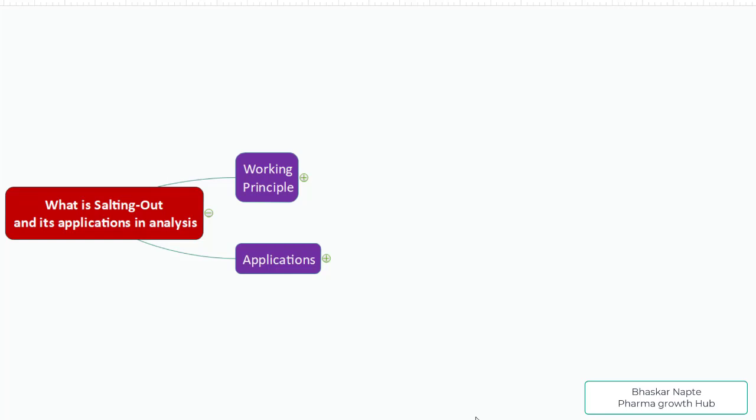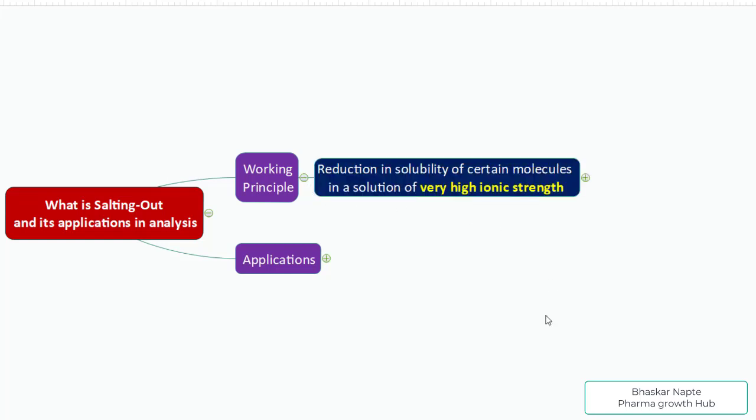At certain lower salt concentrations, the salt actually supports solubilizing proteins. But the moment you start increasing the salt concentration from very low to very high, you start seeing the proteins precipitate and come out of the solution. This higher salt concentration that brings the protein out of the solution is called the salting out effect — the reduction in solubility of certain molecules like proteins.